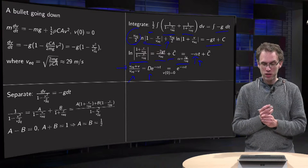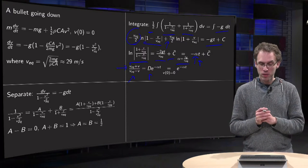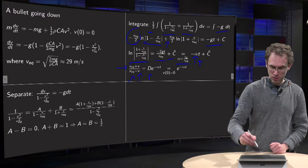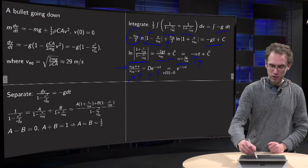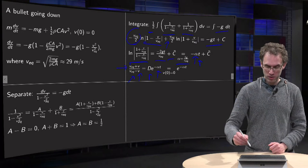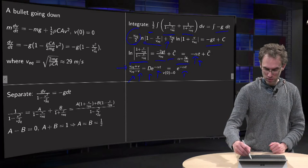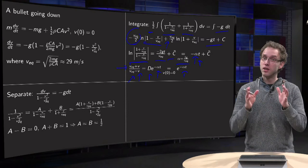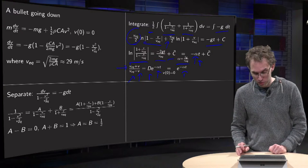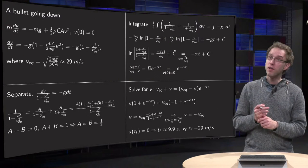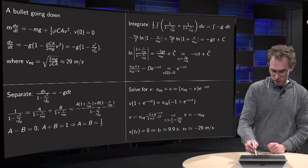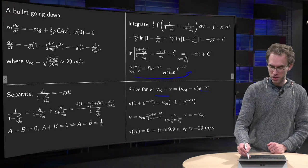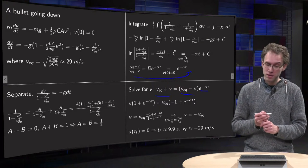Plugging in the initial condition t equals 0, we have zero velocity. Substituting zero velocity gives 1 on the left and 1 on the right, so d equals 1. Then we find (v_equilibrium plus v) over (v_equilibrium minus v) equals e to the power minus alpha·t, where alpha is a known constant. Finally solving for v: v_equilibrium plus v equals the exponential times (v_equilibrium minus v). Bring the v terms to the left and v_equilibrium to the right.